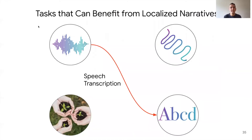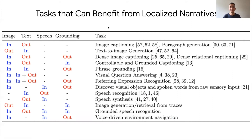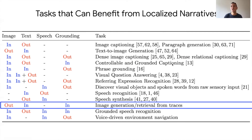Traditional speech transcription goes from audio to text, but particularly interesting now is to add the mouse trace, enabling audio and mouse trace over an image to text — grounded speech transcription. This would enable distinguishing very similarly sounding words like 'planets' and 'plants' that are often confused based on audio, but can be disambiguated based on the image. There are a number of other tasks depending on which of the four modalities you use as input or output, some existing in the literature and some as avenues for further research. One in particular is image retrieval from localized narrative traces, which I'll explore in the second part of this talk.